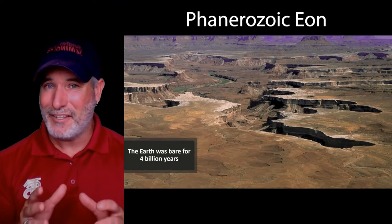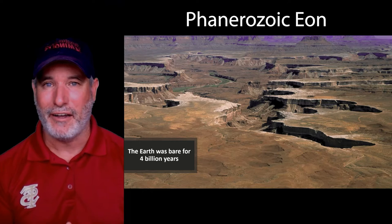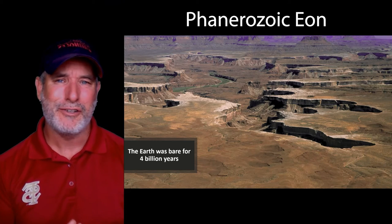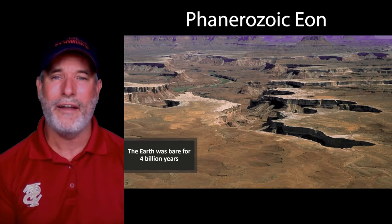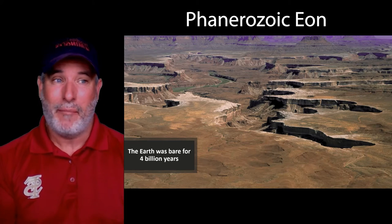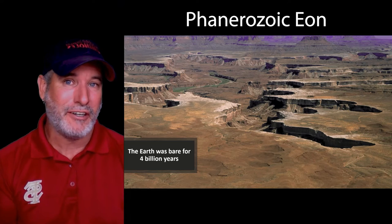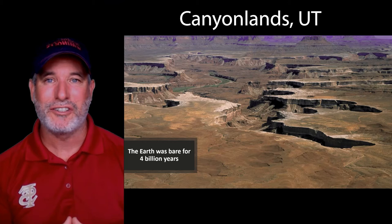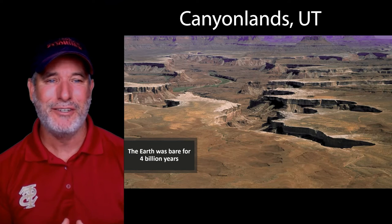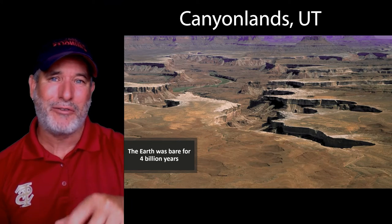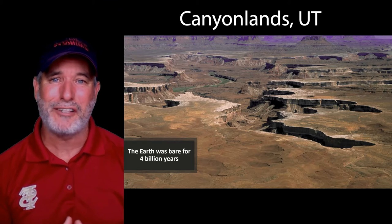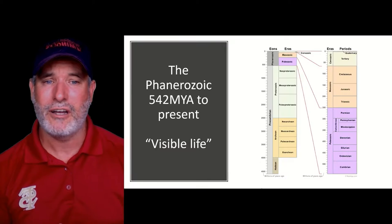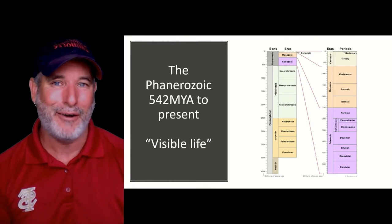Did you know that at the start of the Phanerozoic Eon, 542 million years ago, the Earth's surface was bare? It had been bare for 4.1 billion years. The Earth is only 4.6 billion years old, but the Earth's surface would have looked similar to Canyon Lands in Utah. There weren't any plants at the beginning of the Phanerozoic Eon, but that is about to change.